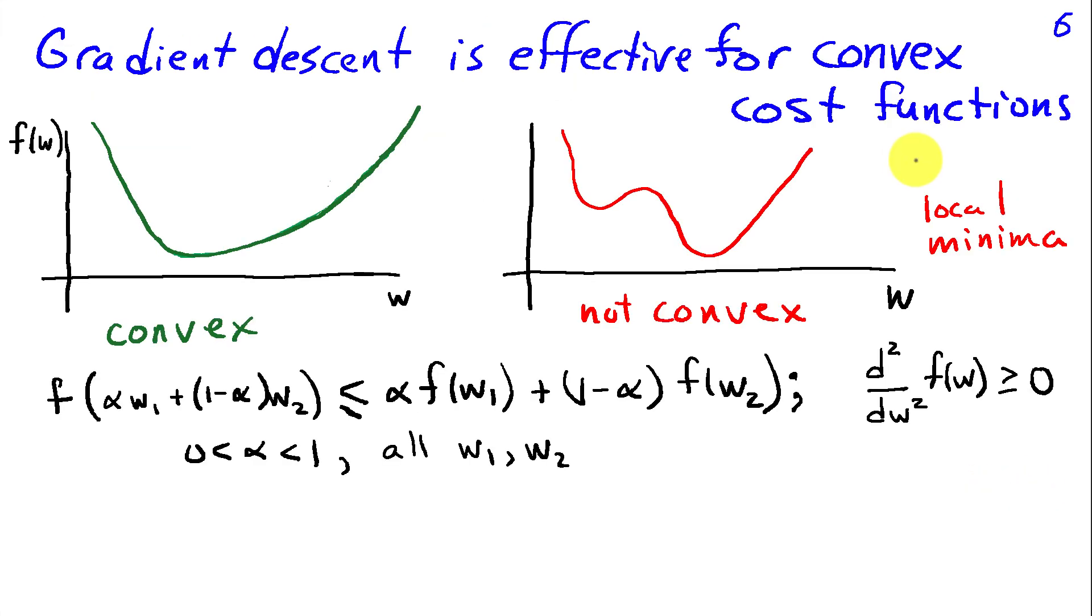Now, an important question is under what conditions does gradient descent find the minimum of our cost function? It turns out that an attribute called convexity plays a very important role in determining whether gradient descent is going to converge to the global optimum.